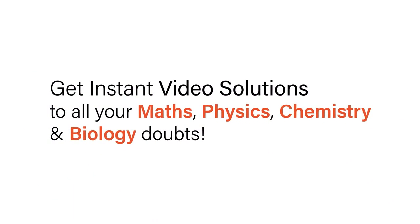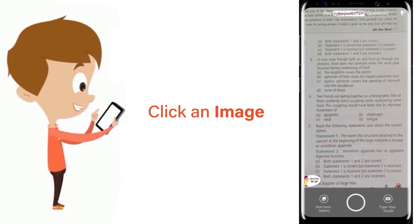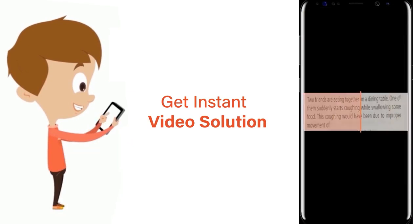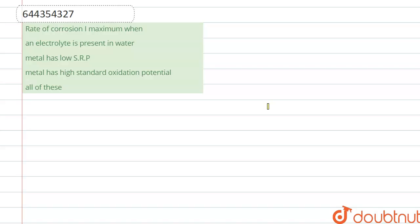With Doubtnut, get instant video solutions to all your maths, physics, chemistry, and biology doubts. Just click the image of the question, crop the question, and get instant video solution. Hello everyone, here the question is: rate of corrosion is maximum when? These are the conditions.